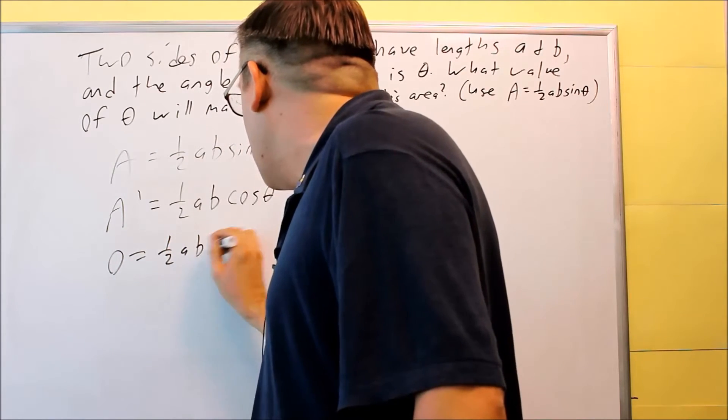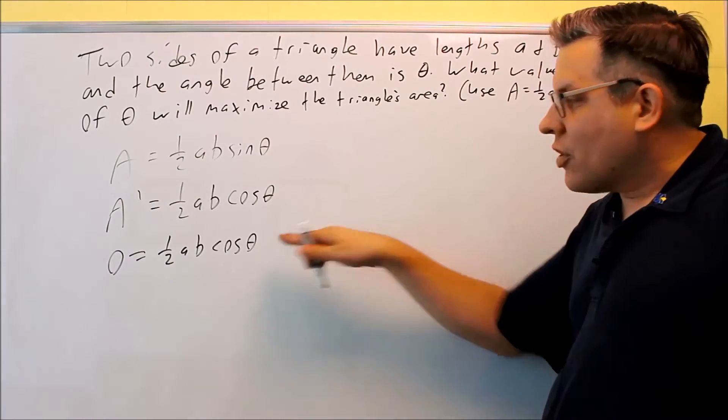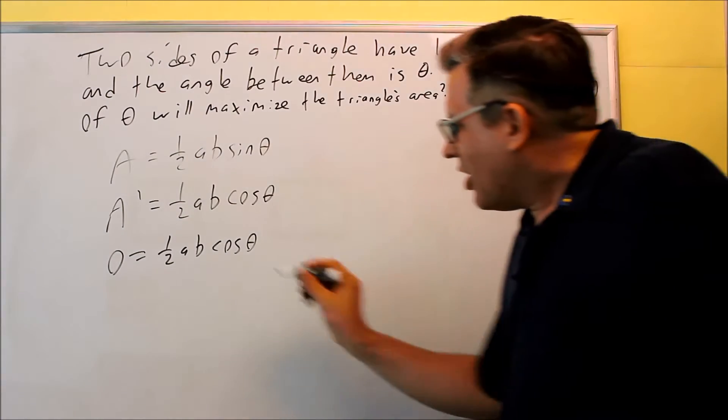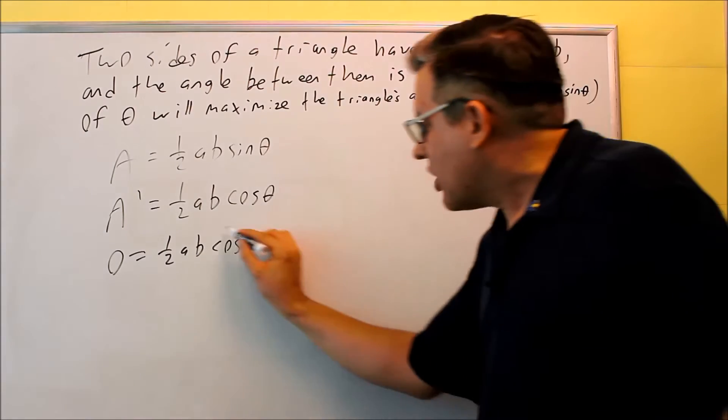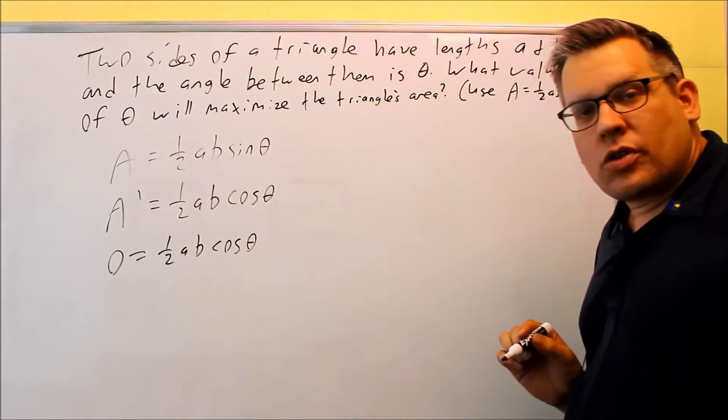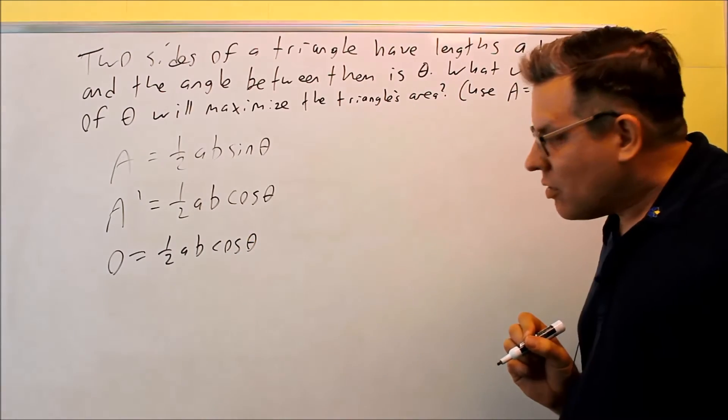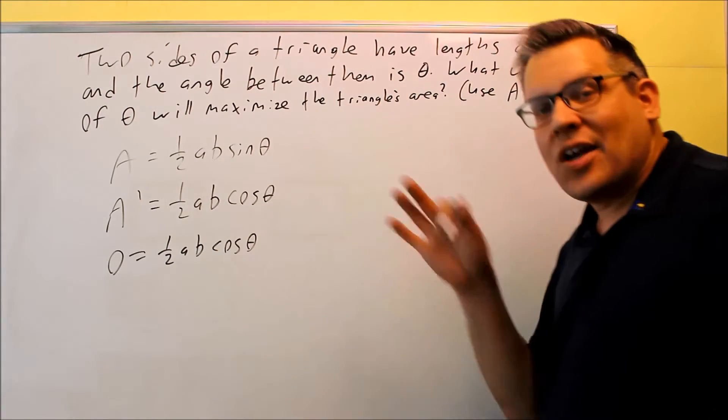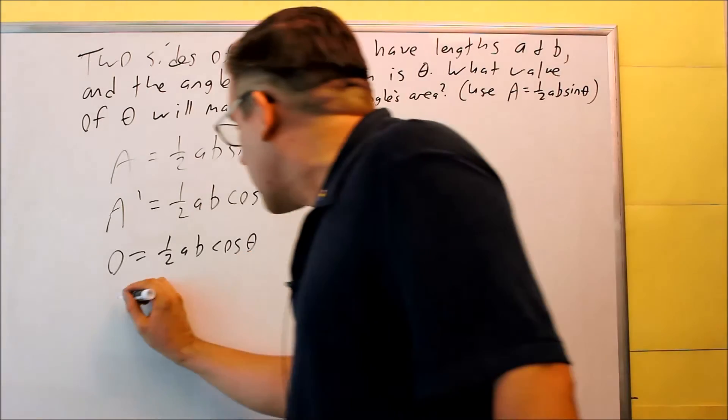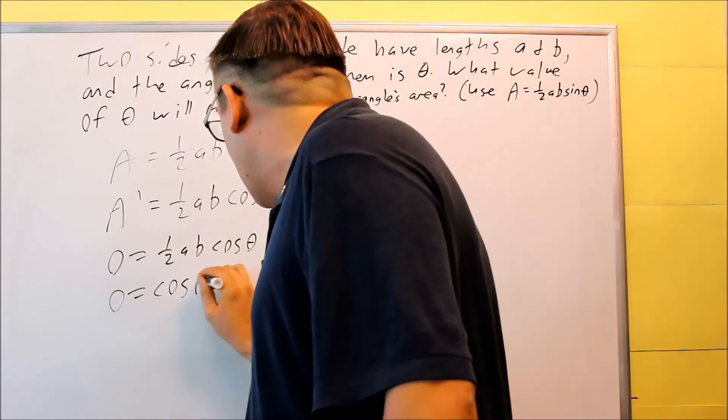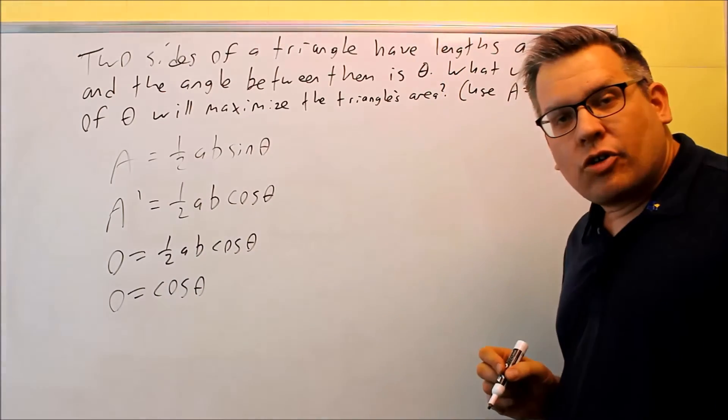Let's set it equal to zero. Zero equals one-half ab cosine theta. Now for this, when you set it equal to zero, because all this is a constant you can actually ignore all that - you're only going to set the cosine equal to zero. This part can't be set equal to zero because that's going to be fixed. A and B are already given as lengths of a certain triangle, so we're just going to do zero equals cosine theta. You could also algebraically divide all that out and you'll get zero equals cosine theta.